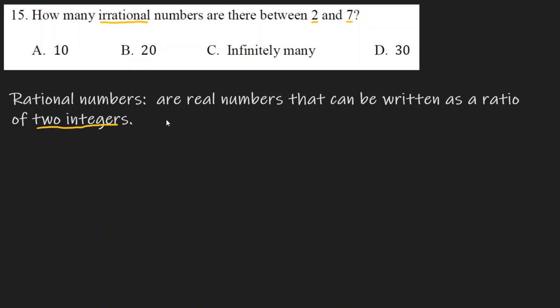Integers — so rational numbers are the same as a fraction of two integers. Rational numbers are close to the original integer, the ratio of the dimension.